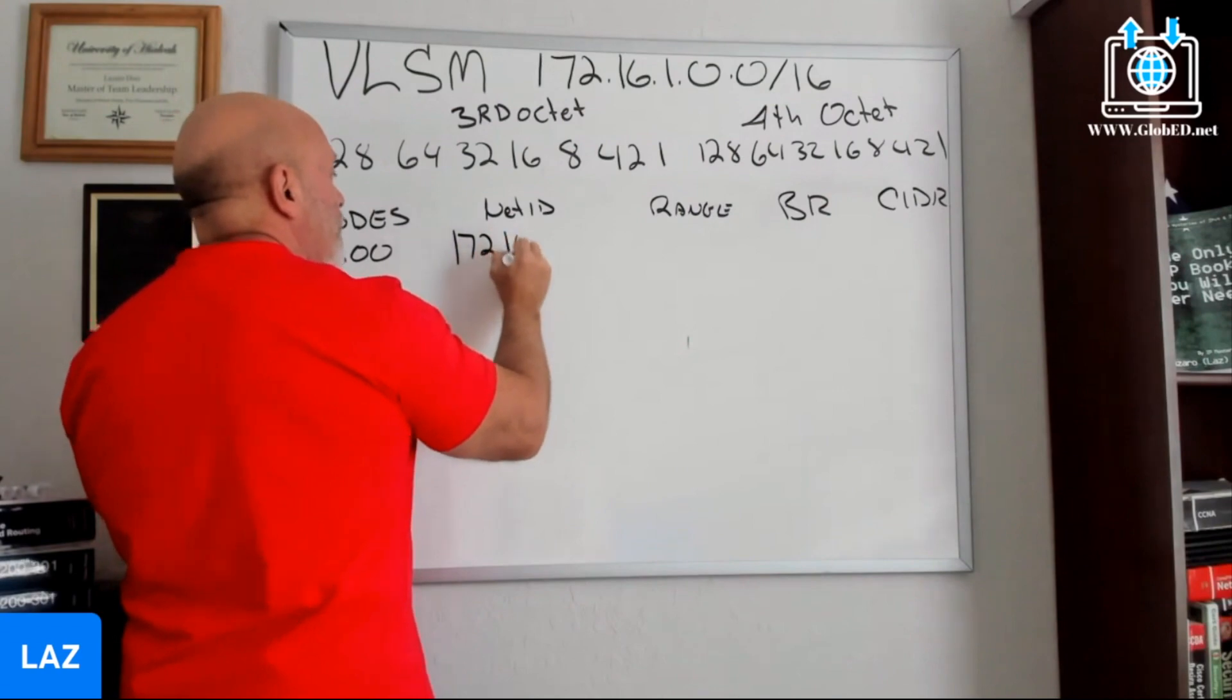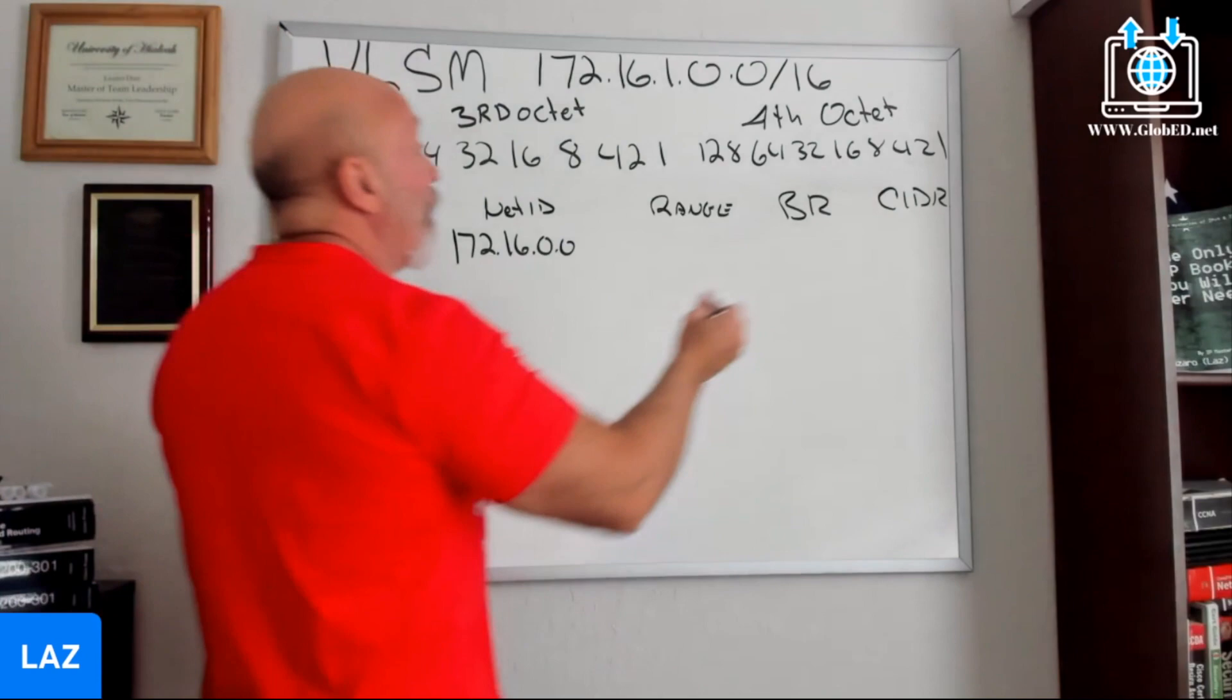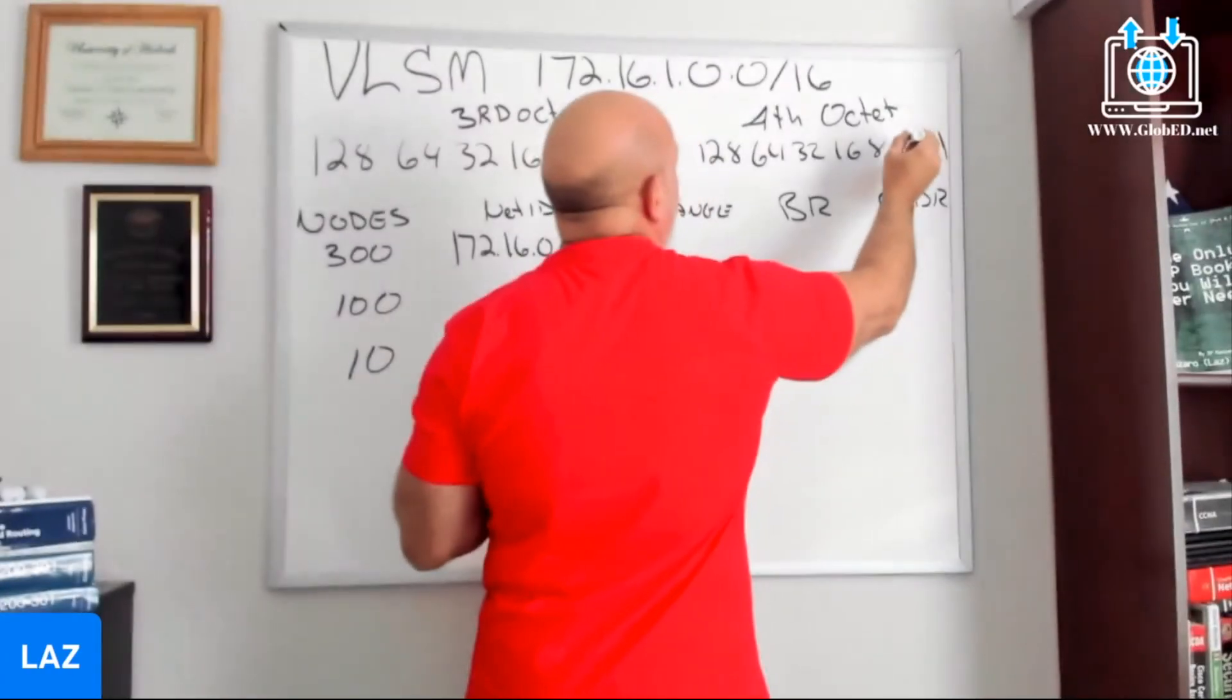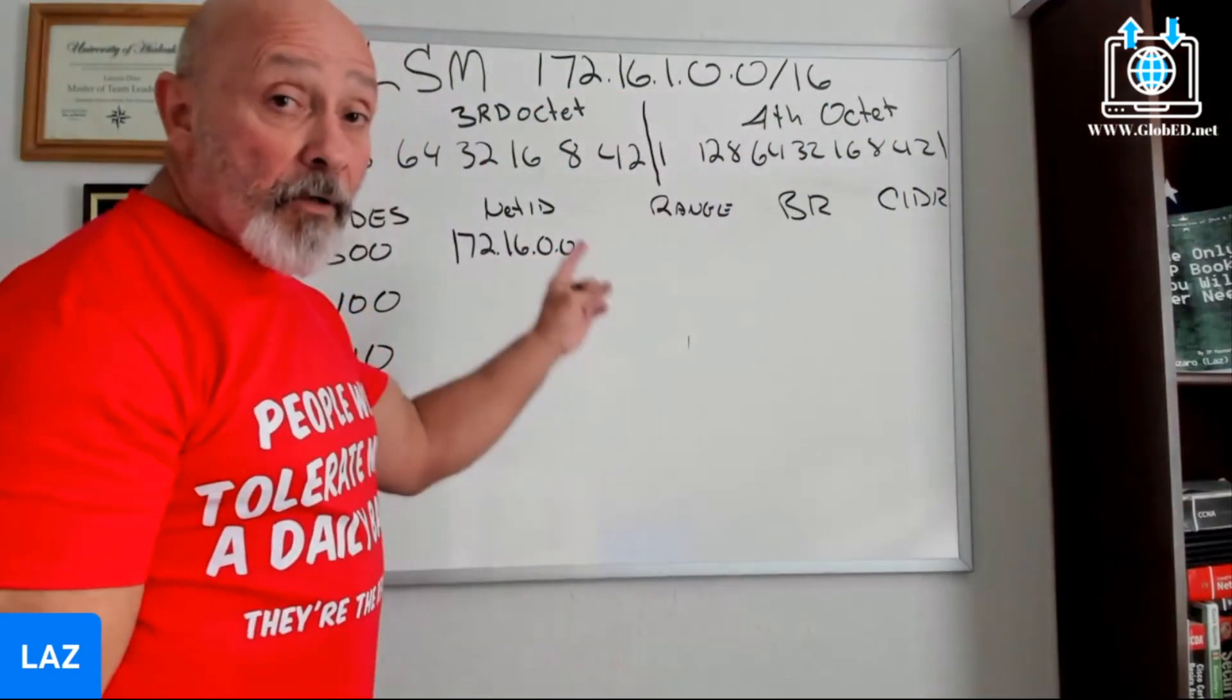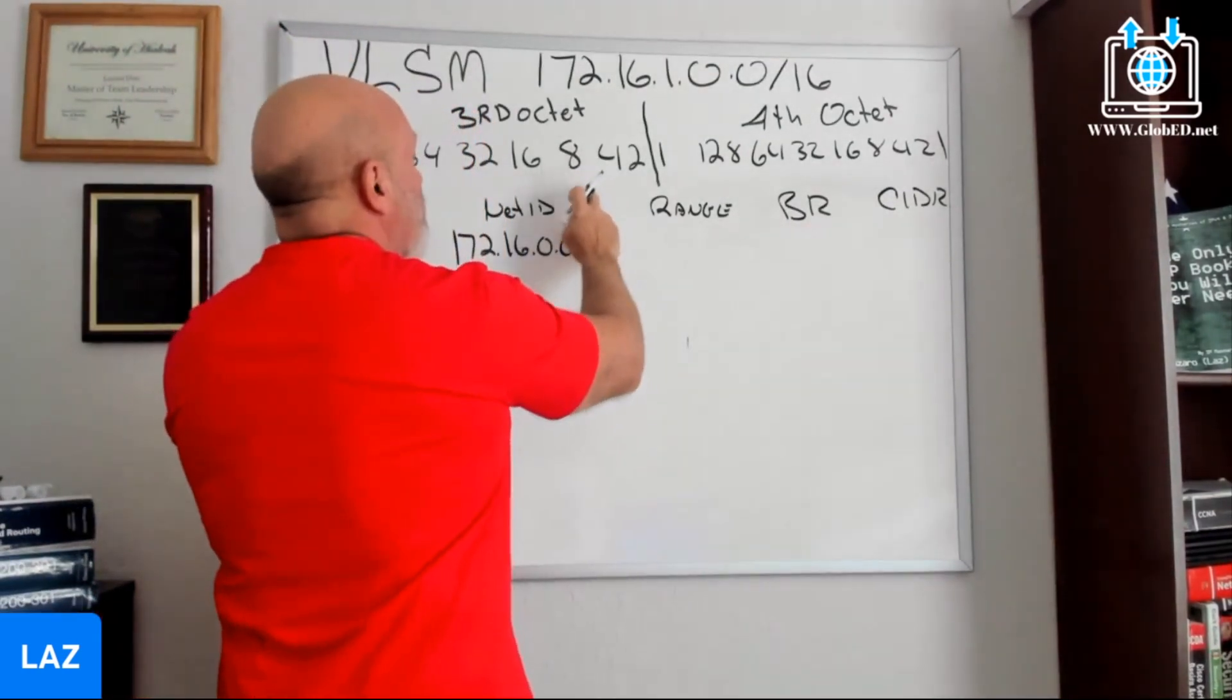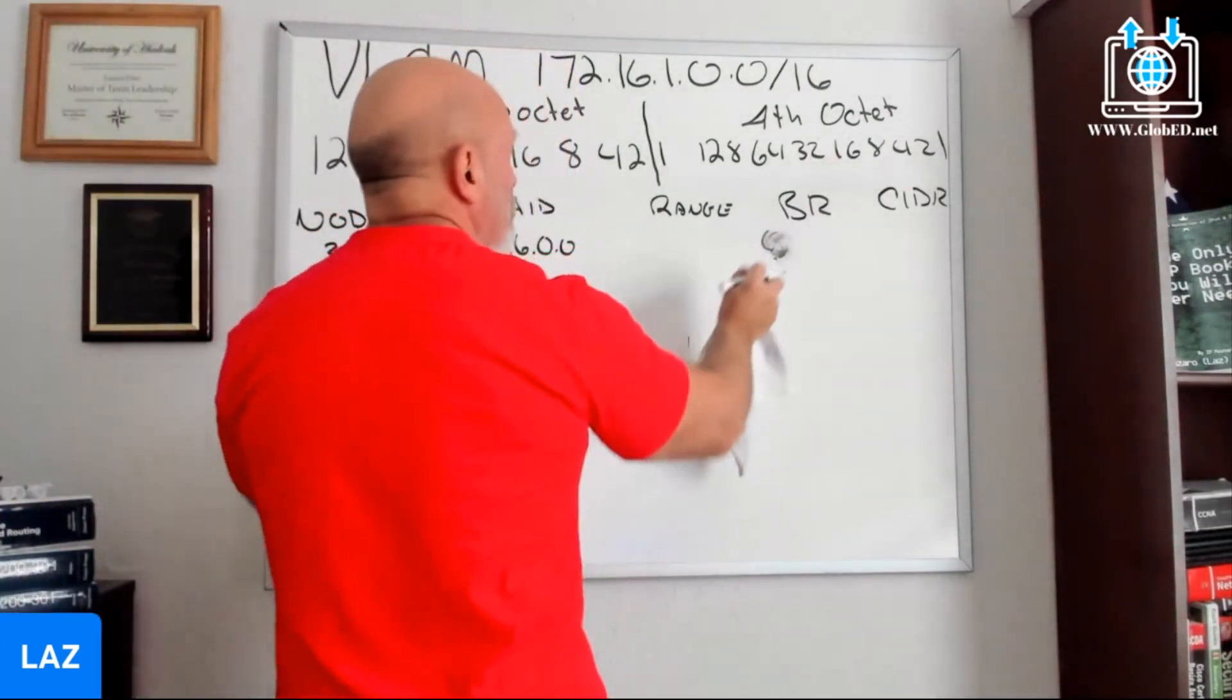Our starting point is 172.16.0.0. We need 300 nodes, so we count for that. We start from right to left - 2, 4, 8, 16, 32, 64, 128, 256 not enough, but 512 holes. That's not 300, but it's better than 65,000. So we're there. Let's find the broadcast first. This is the third octet.